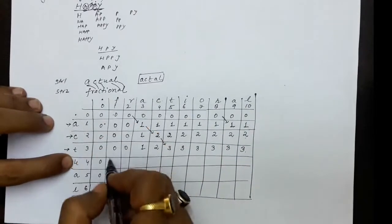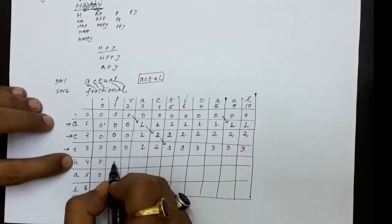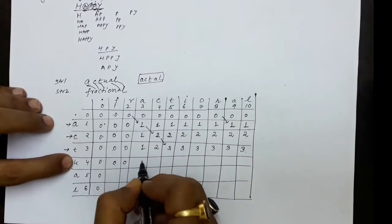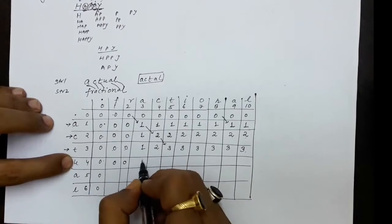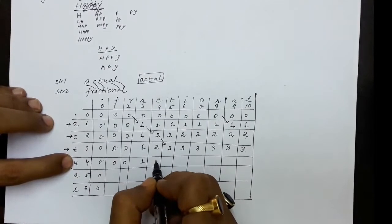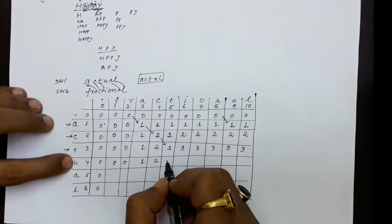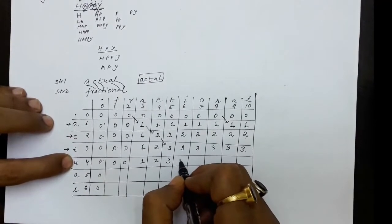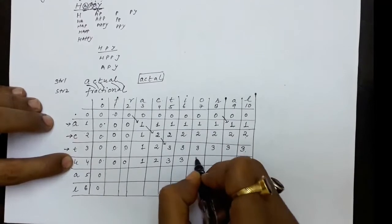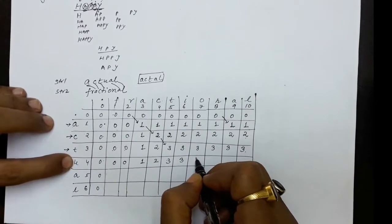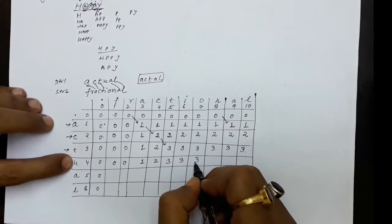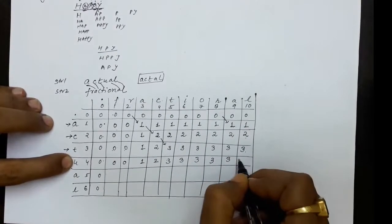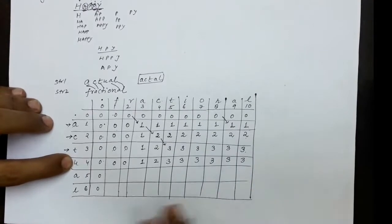Now for u: u does not match f, r, a — no match, maximum is 0 for f, then carries. U and c — maximum is 2. U and t — maximum of 2 and 3 is 3. U and i, o — maximum of 3 and 3. U and n — maximum. U and a — no match. U and l — no match.